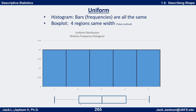Here's a box plot for the uniform distribution, using the Tukey method. Notice that the distance from the minimum to Q1, from Q1 to the median Q2, from the median to Q3, and from Q3 to the maximum are all the same length — evenly spaced out. You can see that both in the box plot and in the histogram.